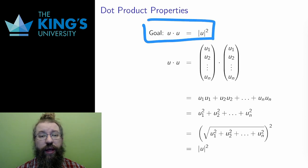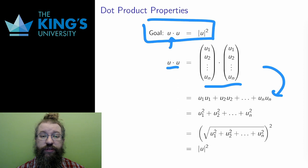Again, I start on the left. I expand in components and use the definition of the dot product to write the multiplication and additions of the components. Then I notice that each multiplication is a multiplication of a number with itself, so I can write these as squares.